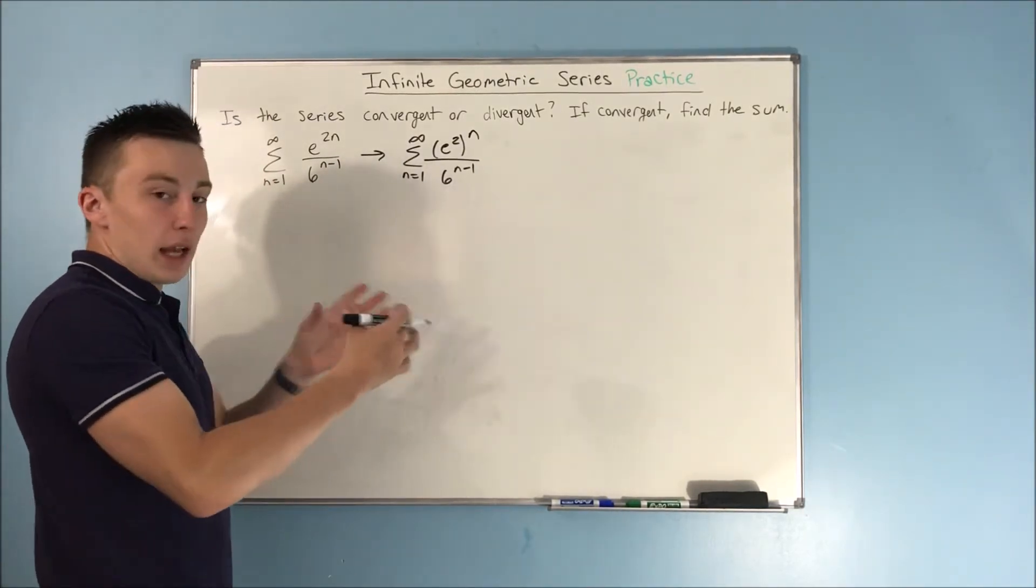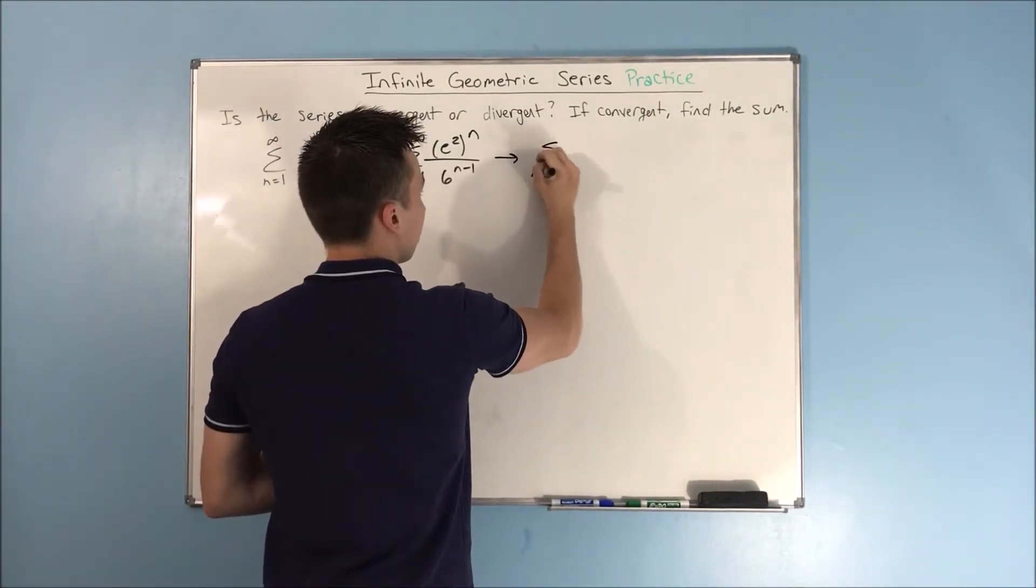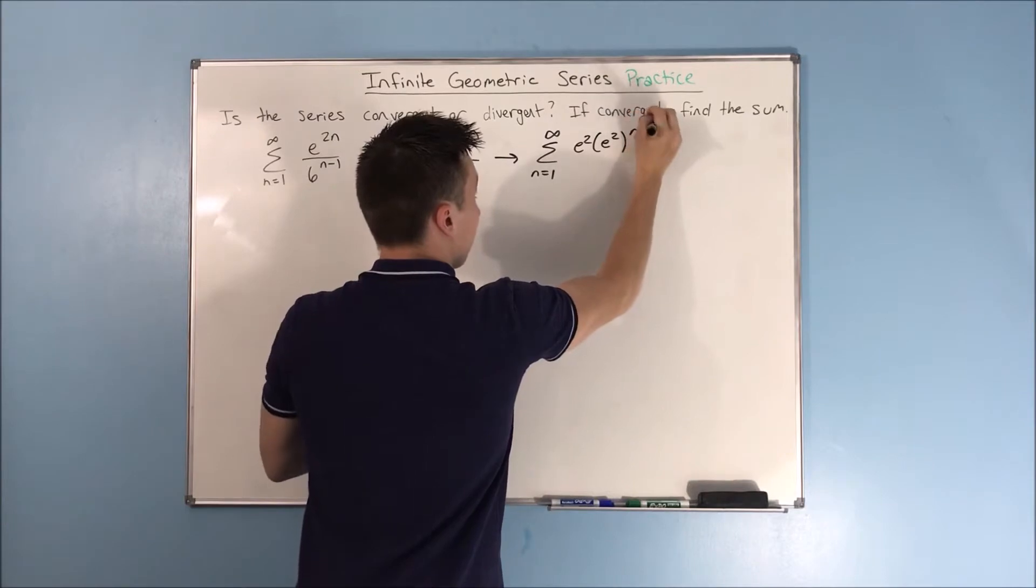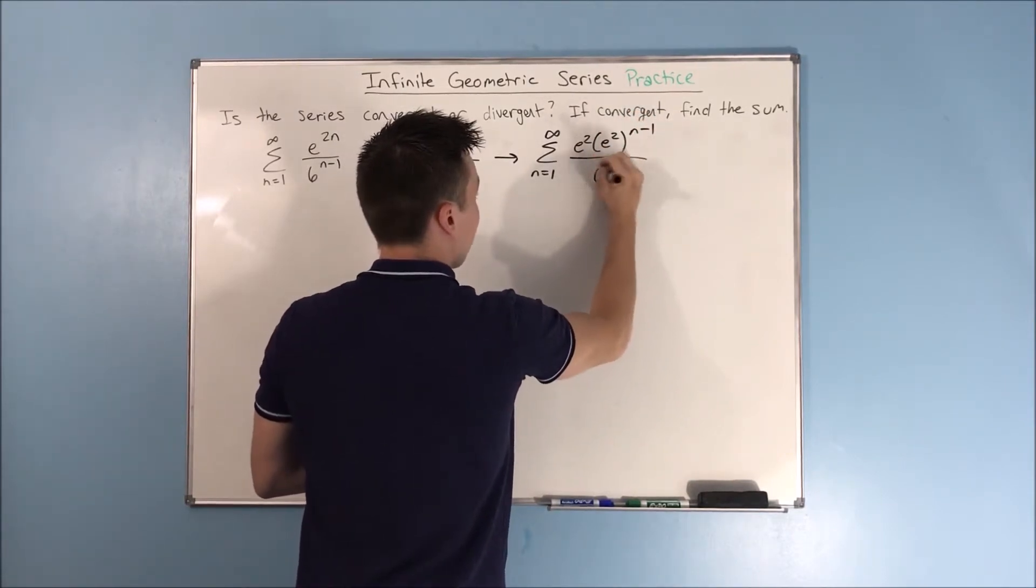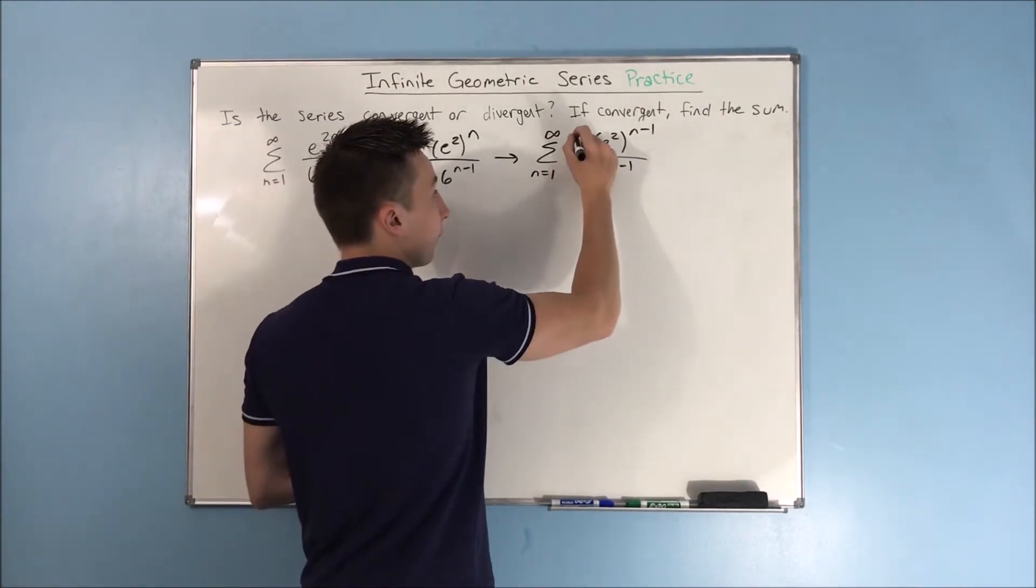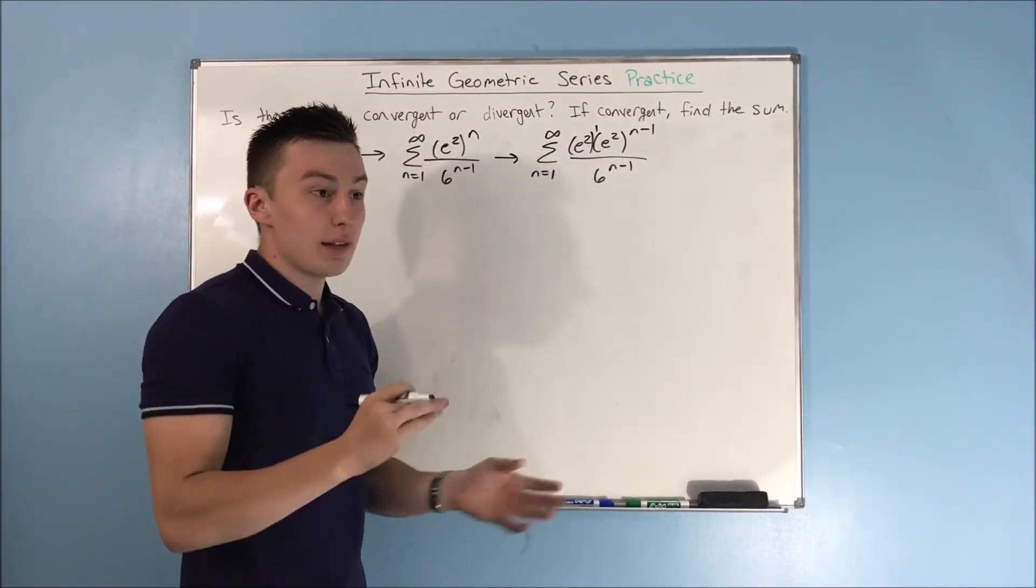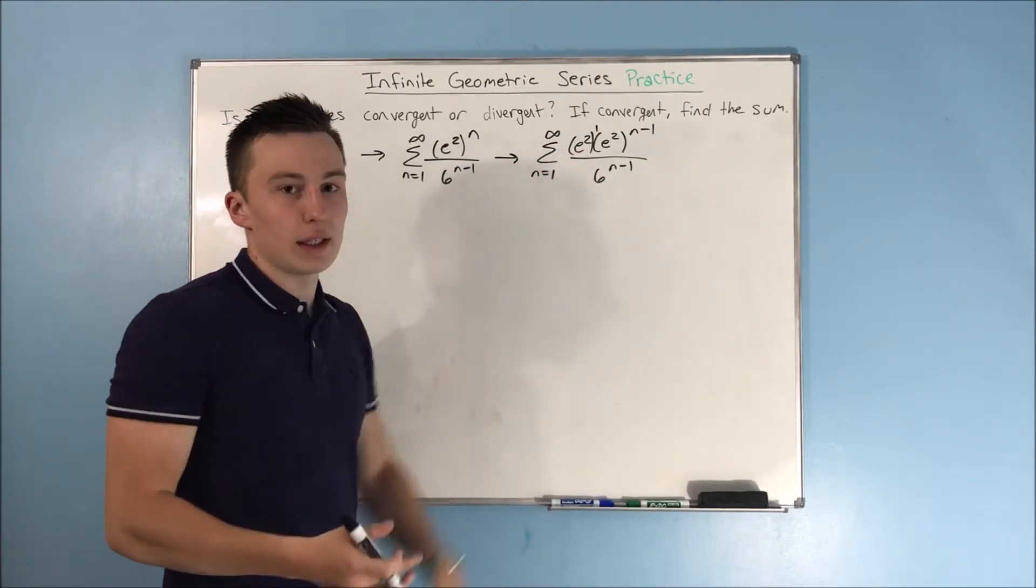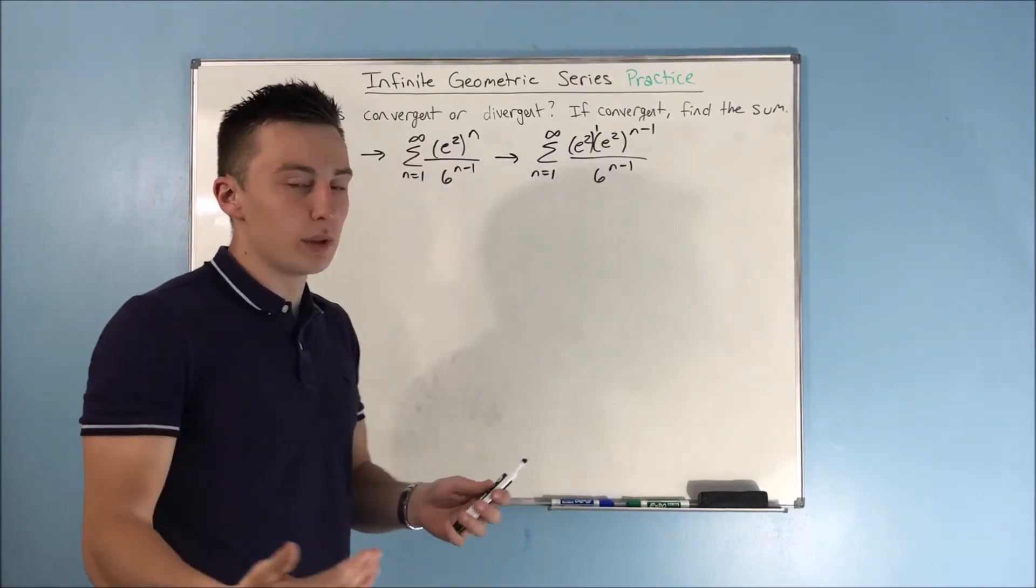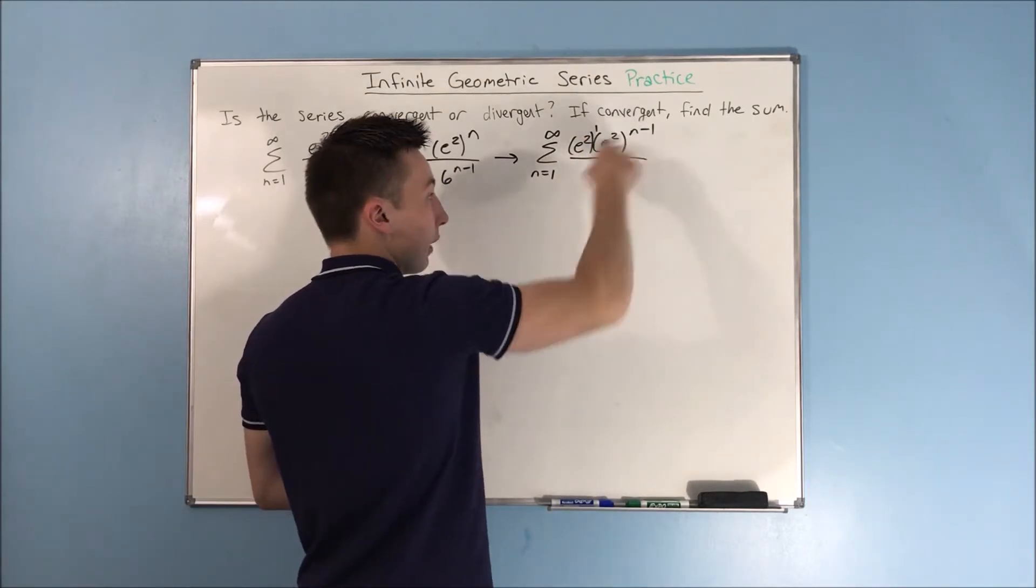and that's to the n power. So, we have to break that up. We write the sum from n equals 1 to infinity of e squared times e squared to the n minus 1. That's going to be over 6 to the n minus 1. Again, this e squared is to the first power. Don't let that square fool you, it's still a constant. And that square is just part of this constant. It's e squared, and that's some long value that we really do not want to write out.